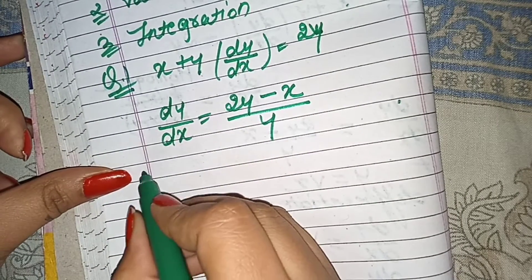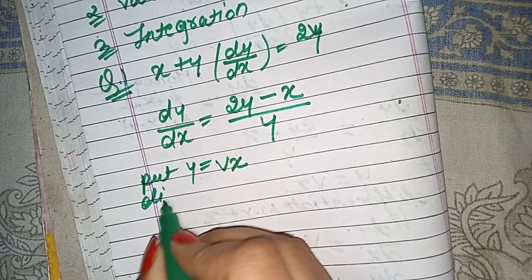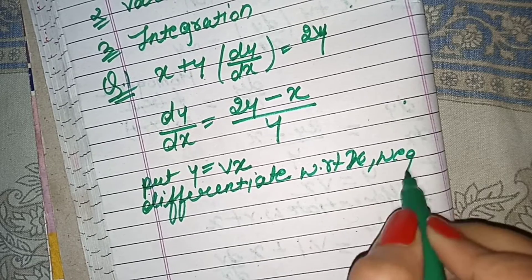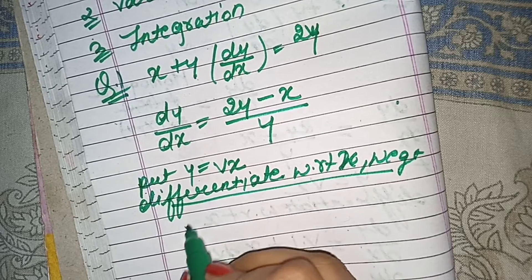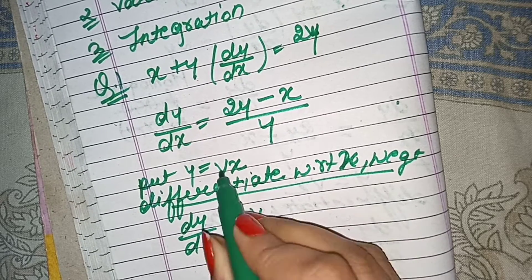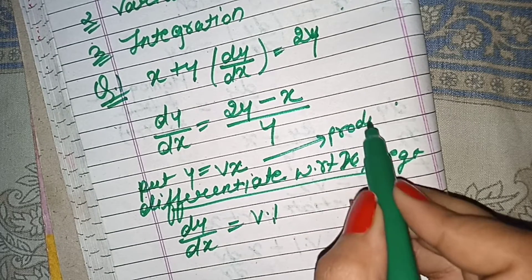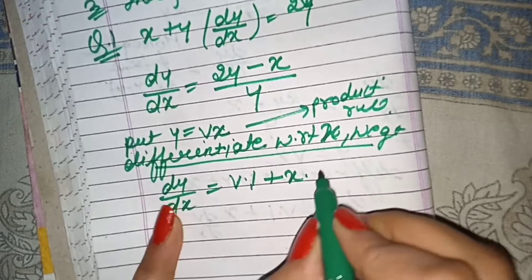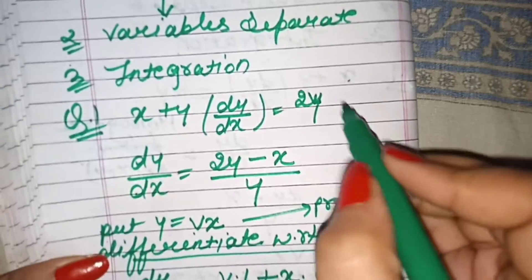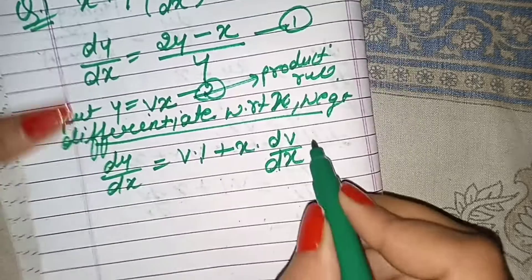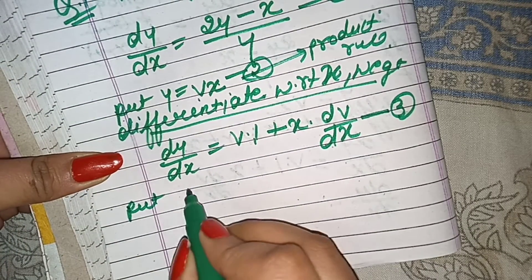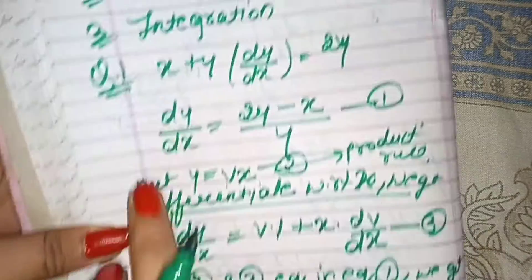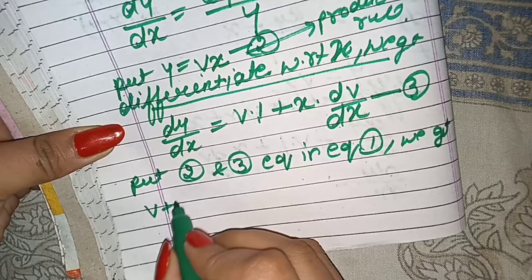Now let's apply the first rule. We let y equal to vx, and we differentiate to get dy over dx equal to v plus x dv over dx. Now our next step is to substitute the values of y and dy over dx — from equations 2 and 3 — into equation number 1.